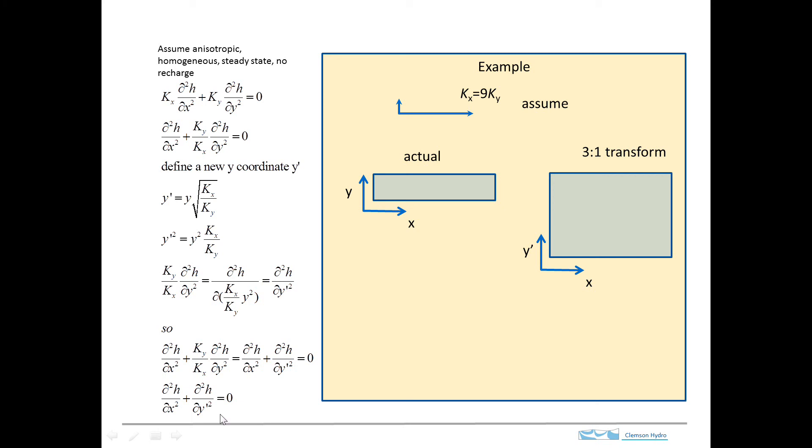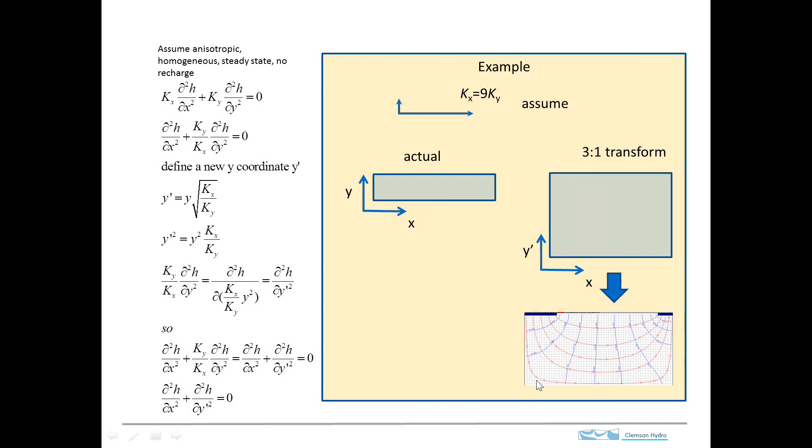Because now we're solving the problem in this coordinate system. So what we can do is if we have a head boundary here and a head boundary here, we solve the flow net and we get something that looks like this. We saw this a class or two ago, and this is just the flow net for isotropic conditions.